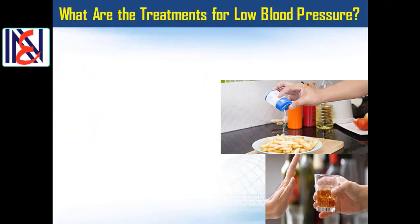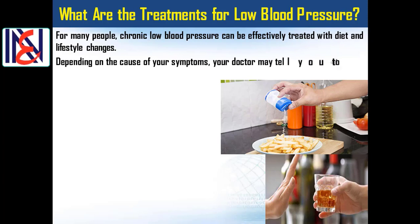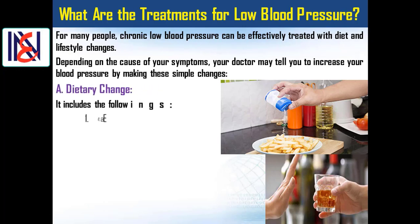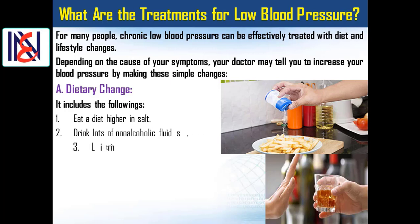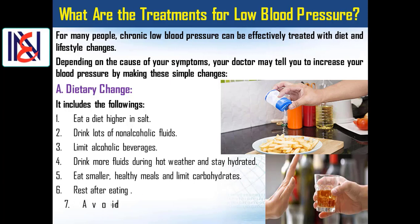What are the treatments for low blood pressure? For many people, chronic low blood pressure can be effectively treated with diet and lifestyle changes. Depending on the cause of your symptoms, your doctor may tell you to increase your blood pressure by making these simple changes. Dietary changes include: 1) eat a diet higher in salt, 2) drink lots of non-alcoholic fluids, 3) limit alcoholic beverages, 4) drink more fluids during hot weather and stay hydrated, 5) eat smaller healthy meals and limit carbohydrates, 6) rest after eating, 7) avoid taking drugs that lower blood pressure before meals.